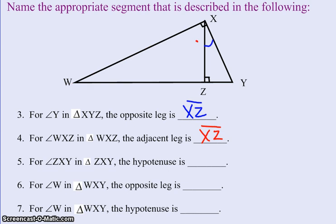Problem number five is talking about angle ZXY. So angle ZXY would be this little guy right here in triangle ZXY. So we know the perspective, we're going from ZXY, so that little angle up at the top. We want to know the hypotenuse. Well, the hypotenuse is going to be the side opposite that right angle. So I say the hypotenuse is XY.